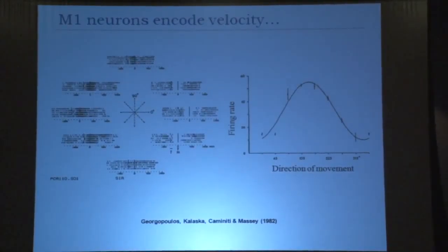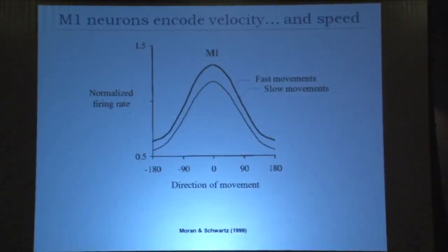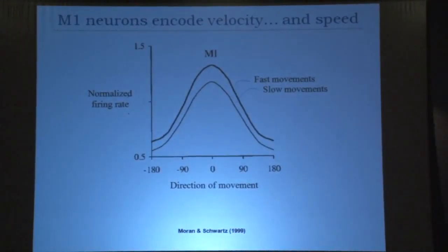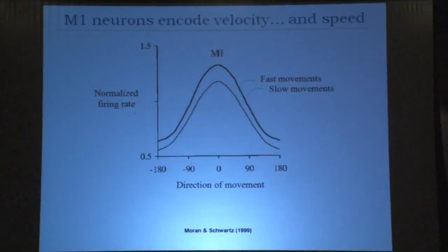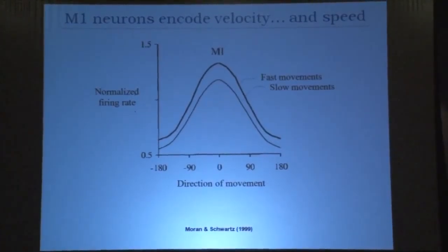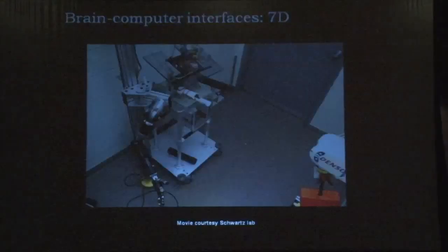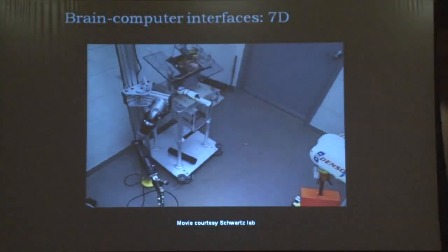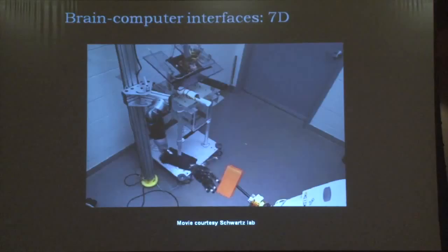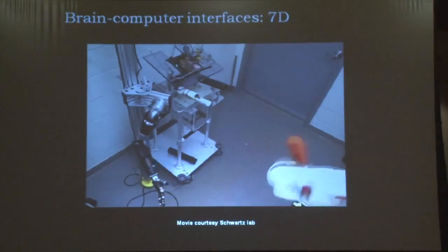People have repeated these experiments and looked for other things that neurons tune for — and in fact they tune for many motor parameters. One example, done by Moran and Schwartz in 1999, showed that in addition to direction, these cells also had strong tuning to movement speed. With this advanced knowledge of how neurons represent movement, the technology behind brain-computer interfaces has gotten much better over the years.